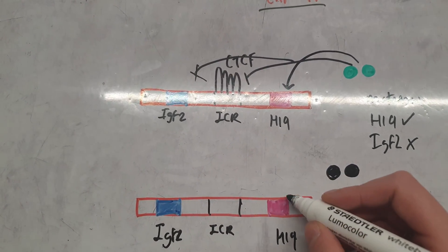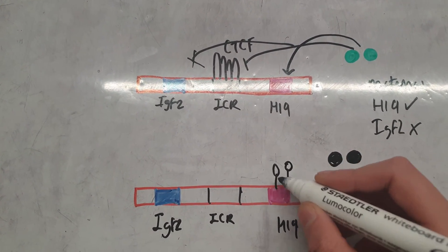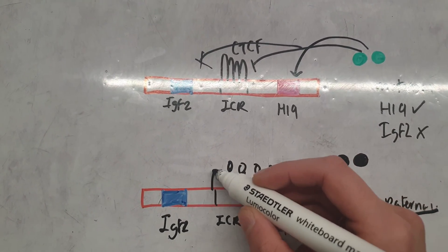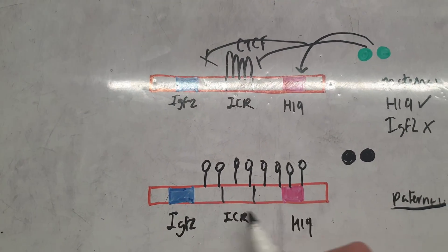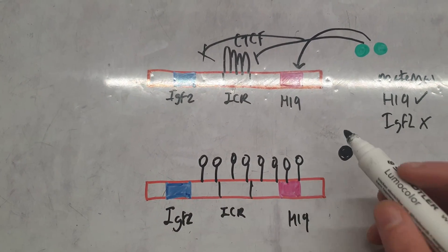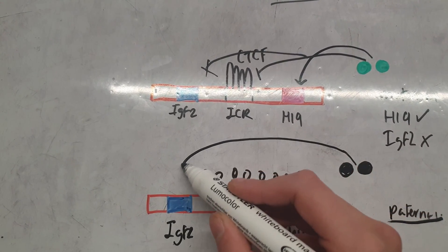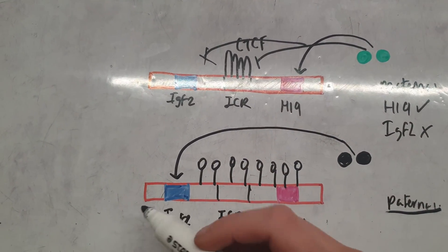So instead we have methylation. We actually methylate all of this gene upstream from the IGF2 that we're interested in, and this means the enhancers are only able to bind to IGF2.